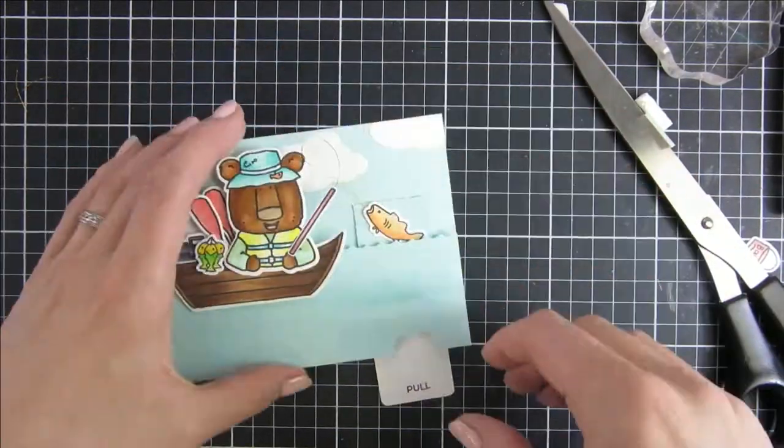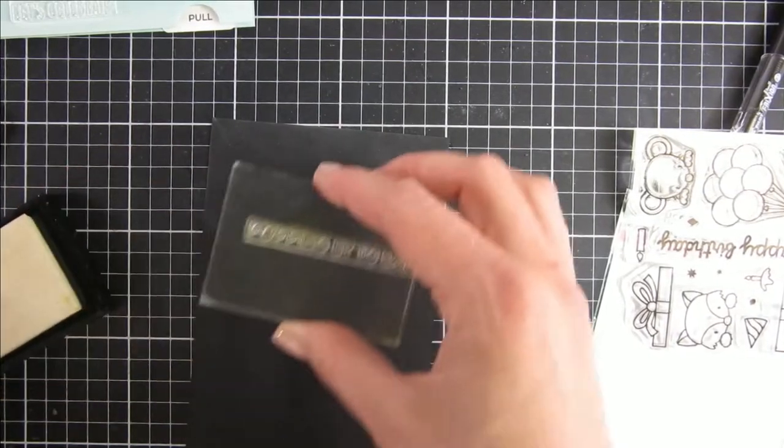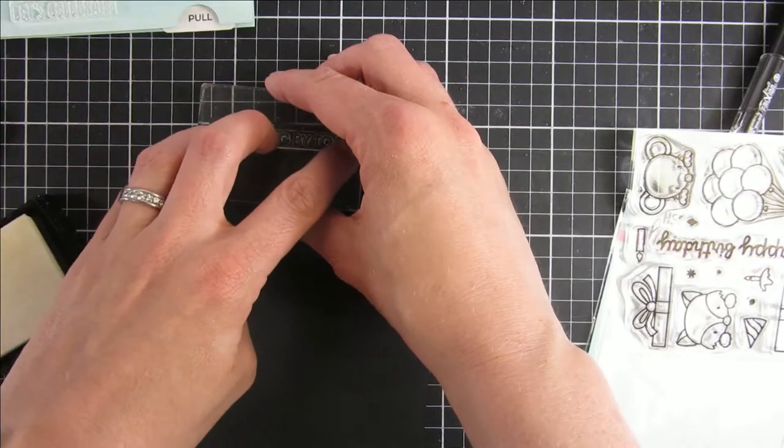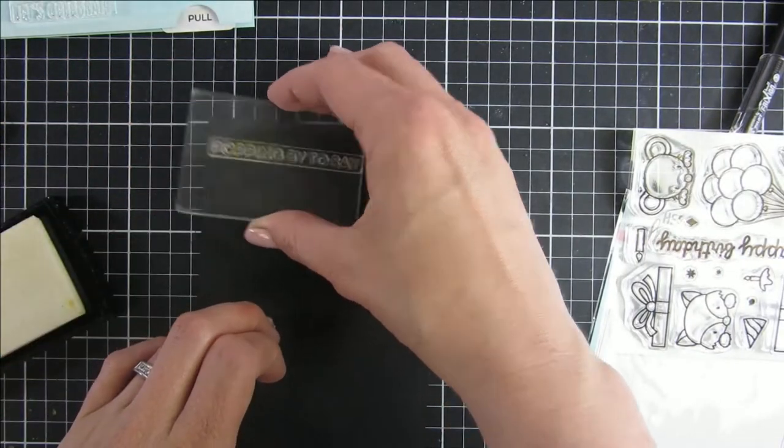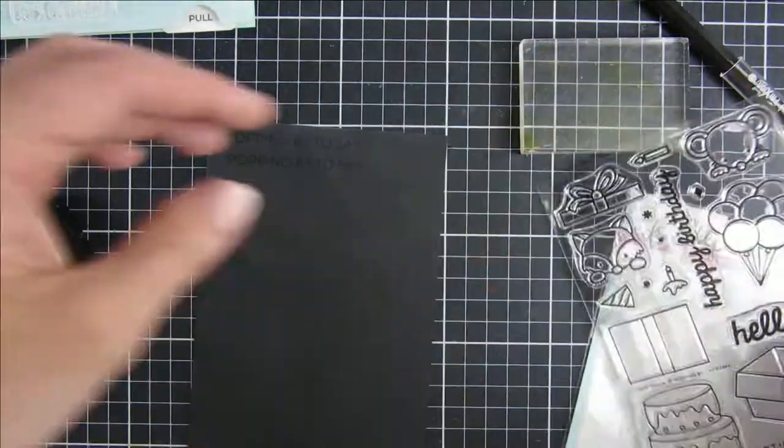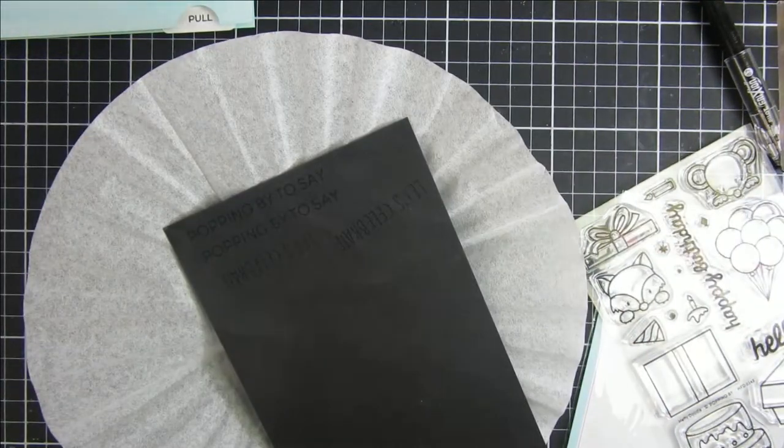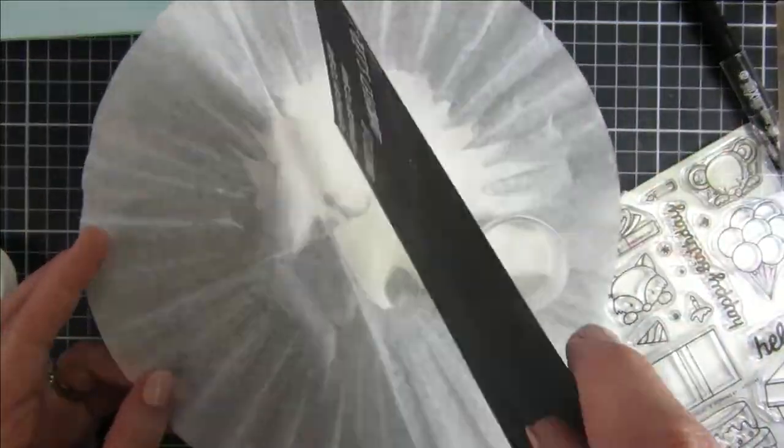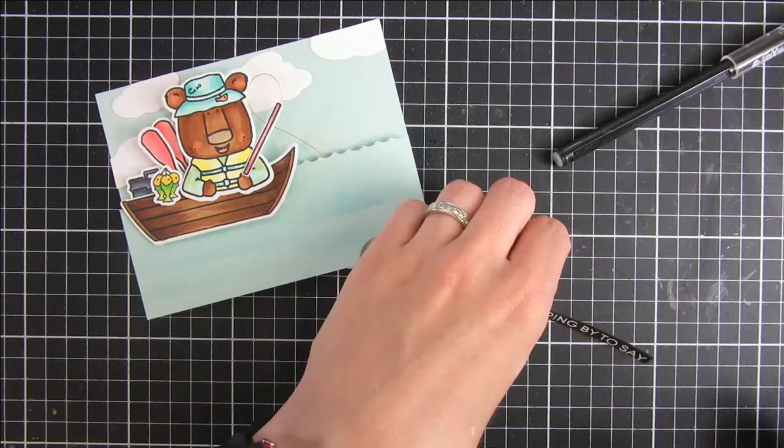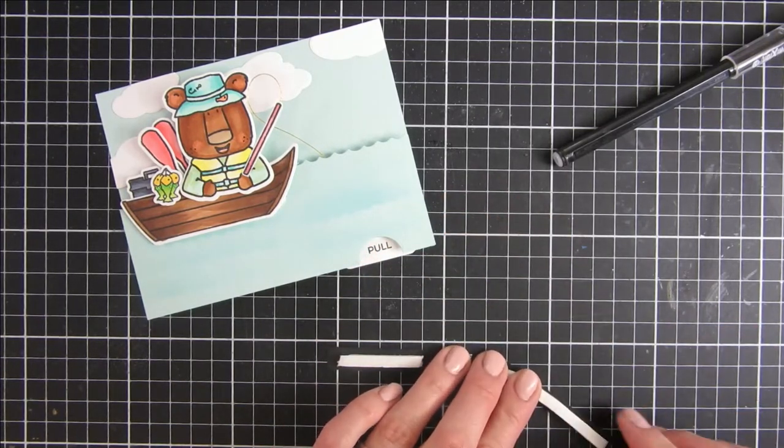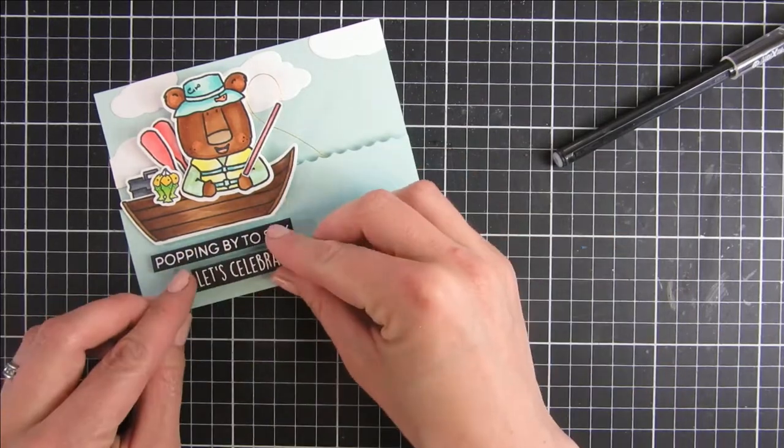Now it starts to look finished and we can see how the card looks when it's all finished. For my sentiment I used a stamp set from Heffy Doodle called Popping By, and it has the most perfect sentiments for this card. You can see here it says Popping By to Say and then you can continue your sentiment. I stamped it a couple of times just to make sure that I had everything nicely. My sentiment says Popping By to Say Let's Celebrate. I love white embossed on black, so that is what I did. Of course I used some more of the double-sided foam strips from Heffy Doodle to adhere my sentiments underneath the boat, and that pretty much finished off our card for today.